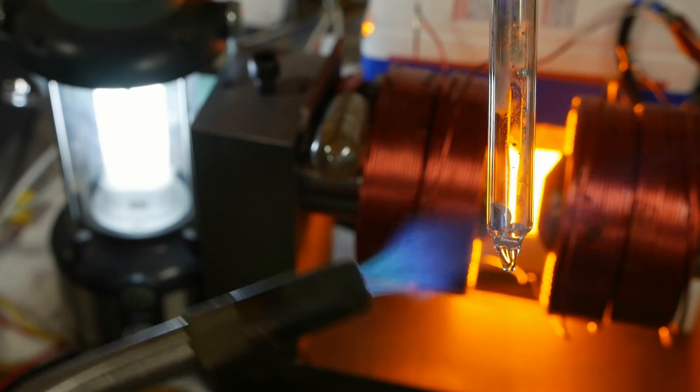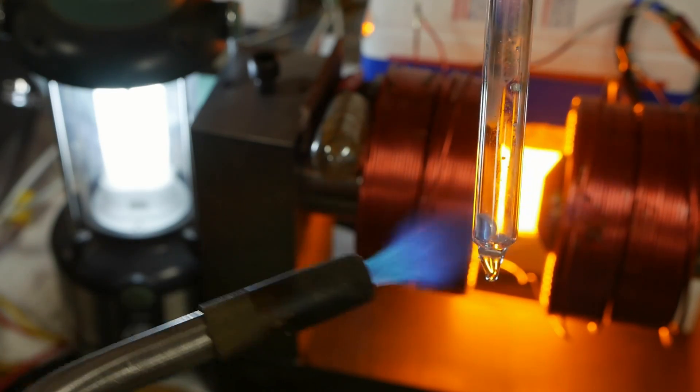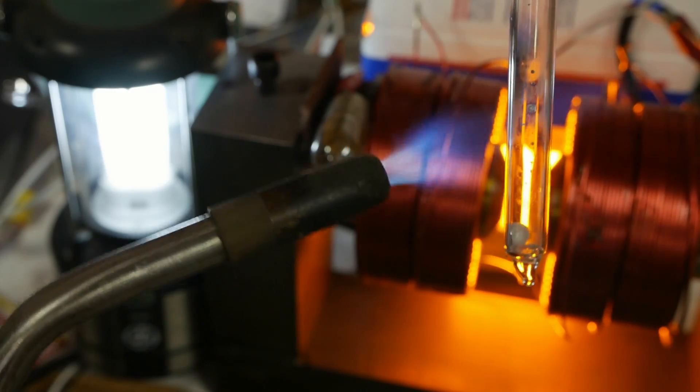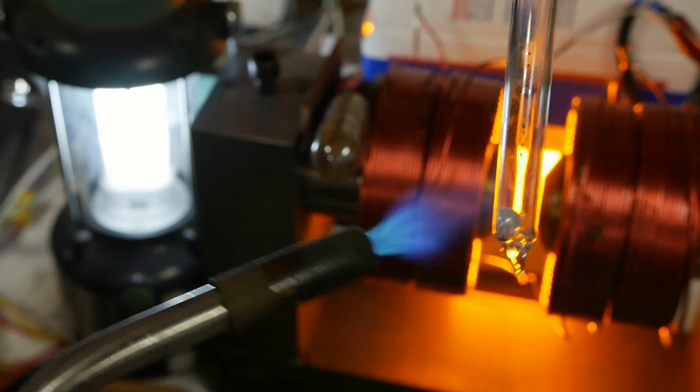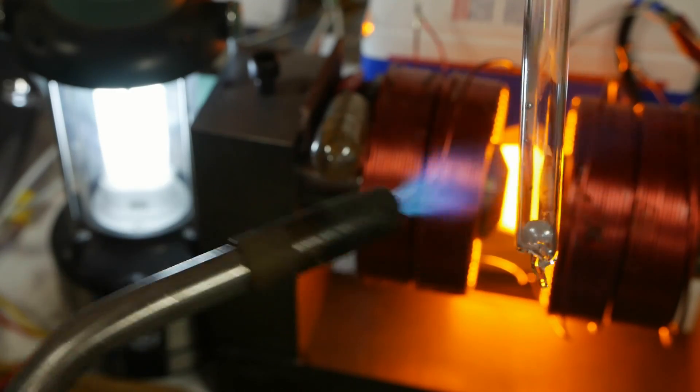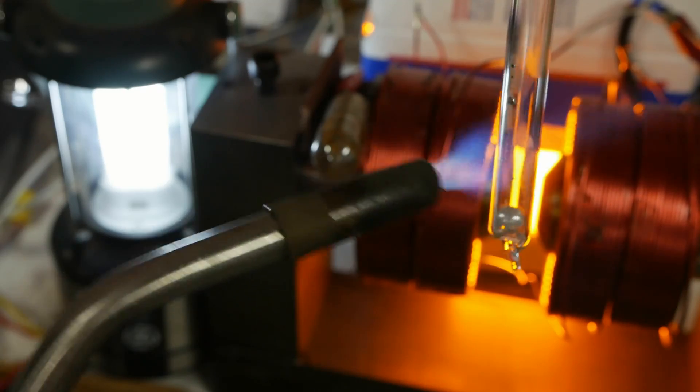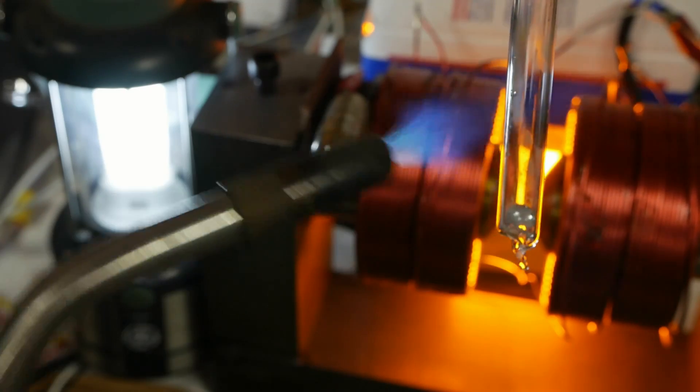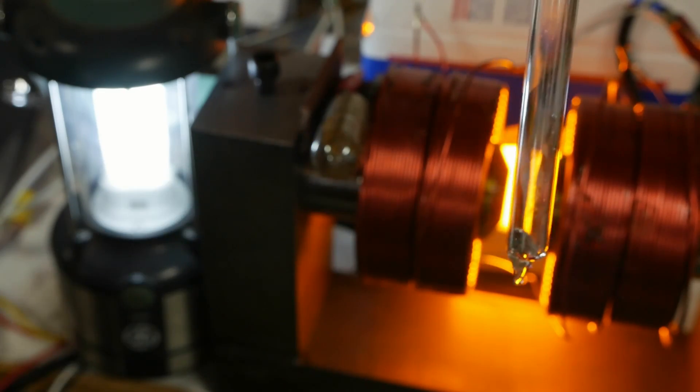As expected, if you heat the tube up, the sodium vaporizes and will absorb light from a sodium lamp. If we hold it in front of the sodium lamp, you can see it turns dark in the tube—it's absorbing the light. But if we hold it in front of a white light, it doesn't absorb it, or it's only absorbing that one narrow sodium line, so most of the white light comes through.